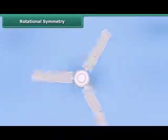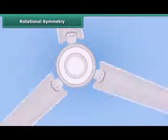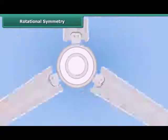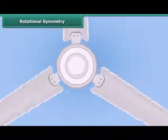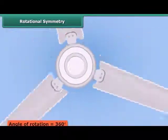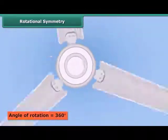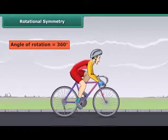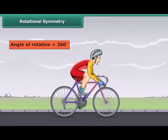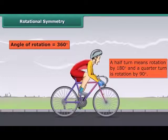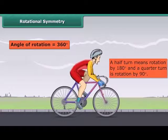When an object rotates, its shape and size do not change. This rotation turns an object about a fixed point, called the center of rotation. The angle of turning during the rotation is called the angle of rotation. If a thing makes a full turn, its angle of rotation is 360 degrees. A half turn means rotation by 180 degrees, and a quarter turn is rotation by 90 degrees.